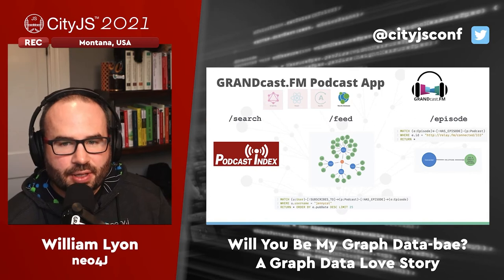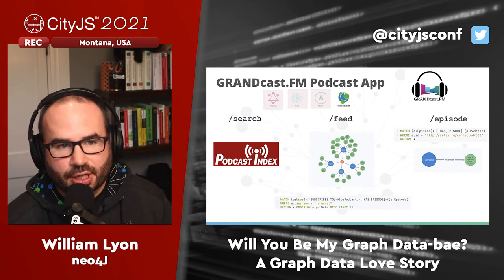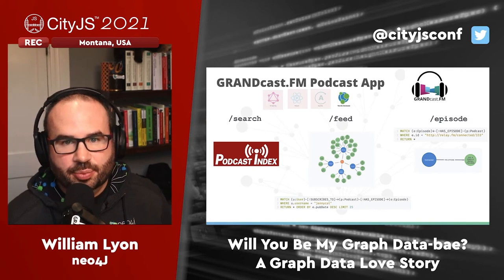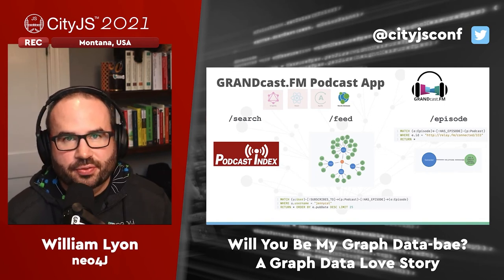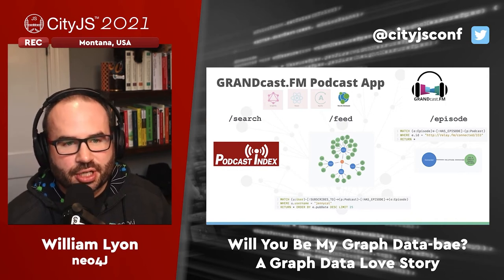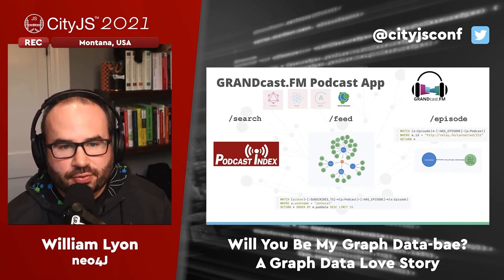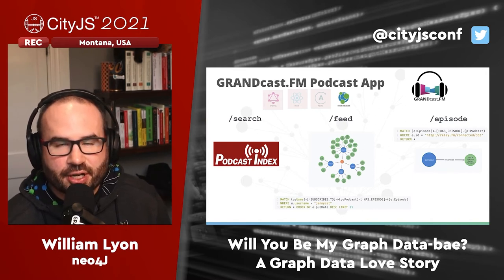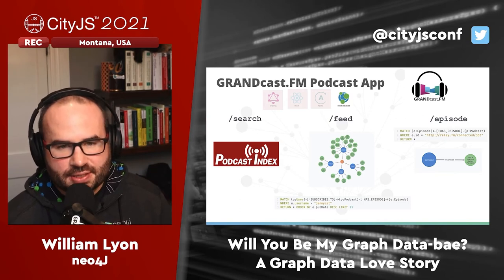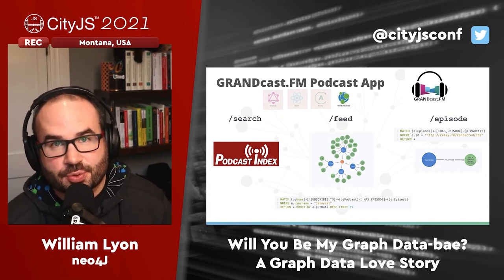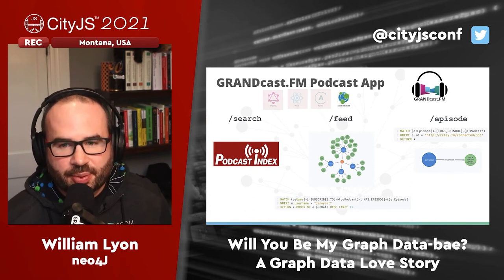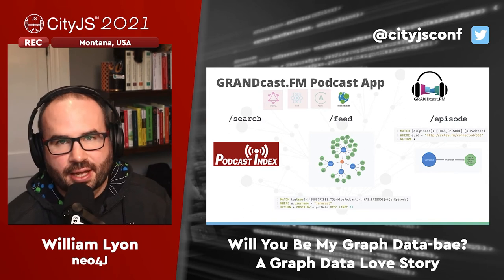On the back end, for search we're calling out to a REST API - the Podcast Index service. This is a great example of GraphQL being data layer agnostic - combining data layers and serving one unified GraphQL API. For searching we call the Podcast Index REST API; for the feed we have a query going to Neo4j with personalization logic finding the most recent episodes of podcasts the user subscribes to; then for the episode view we're looking up an episode by ID and traversing to the podcast it's connected to.